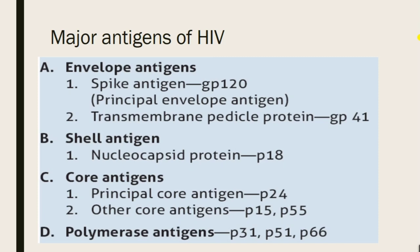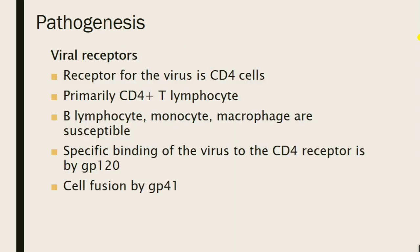The major antigens of HIV include envelope antigens: the spike antigen GP120 and transmembrane pedicle protein GP41. Then the shell antigen, the nucleocapsid protein P18, and core antigens: the principal core antigen P24, with other core antigens P15 and P55. The polymerase antigens are P31, P51, and P66.